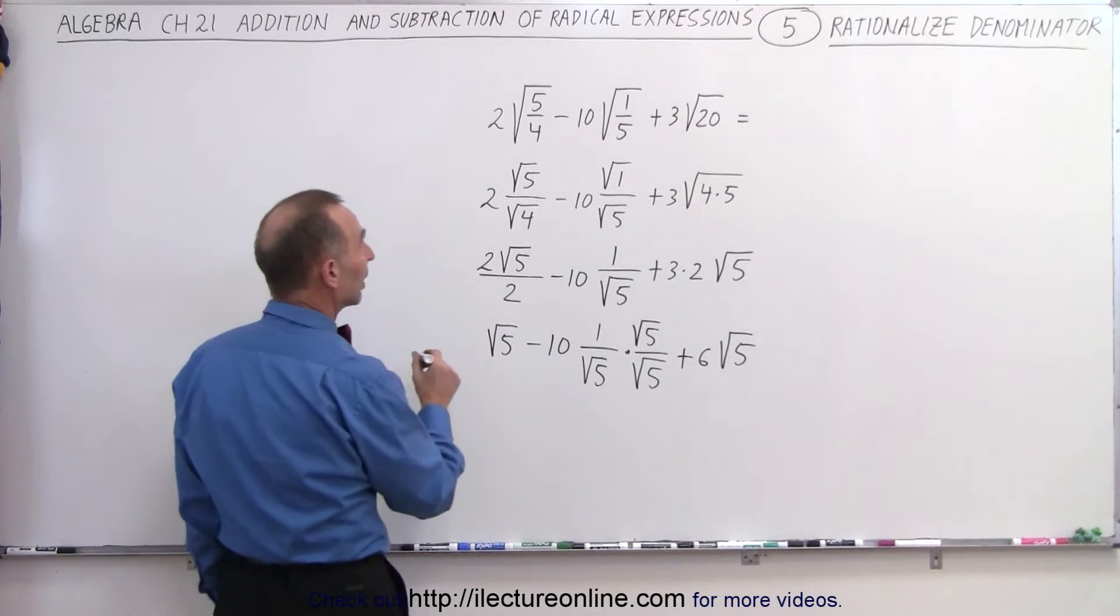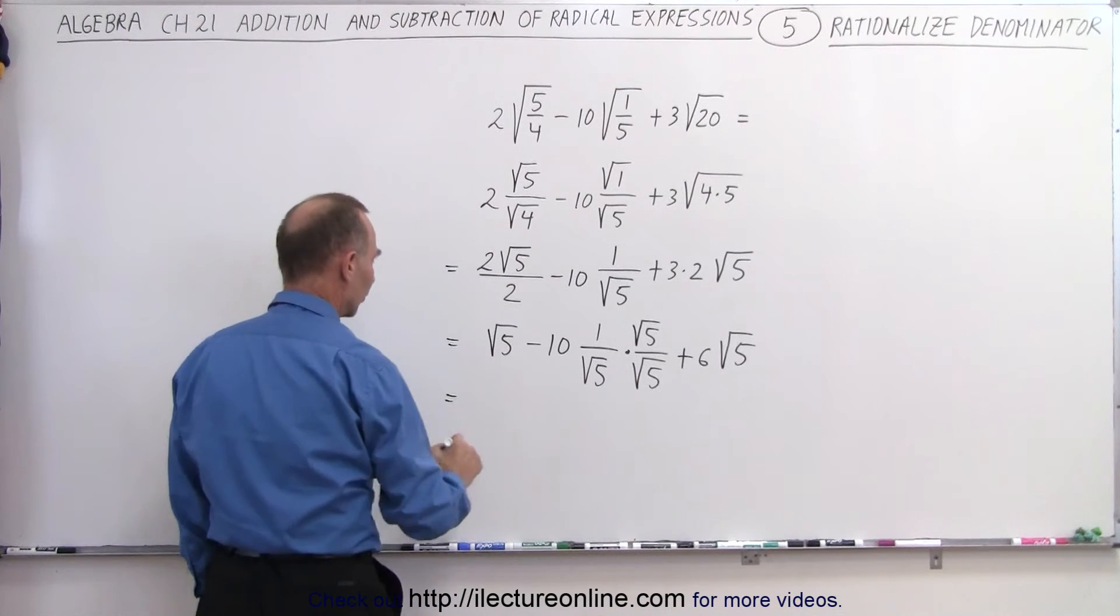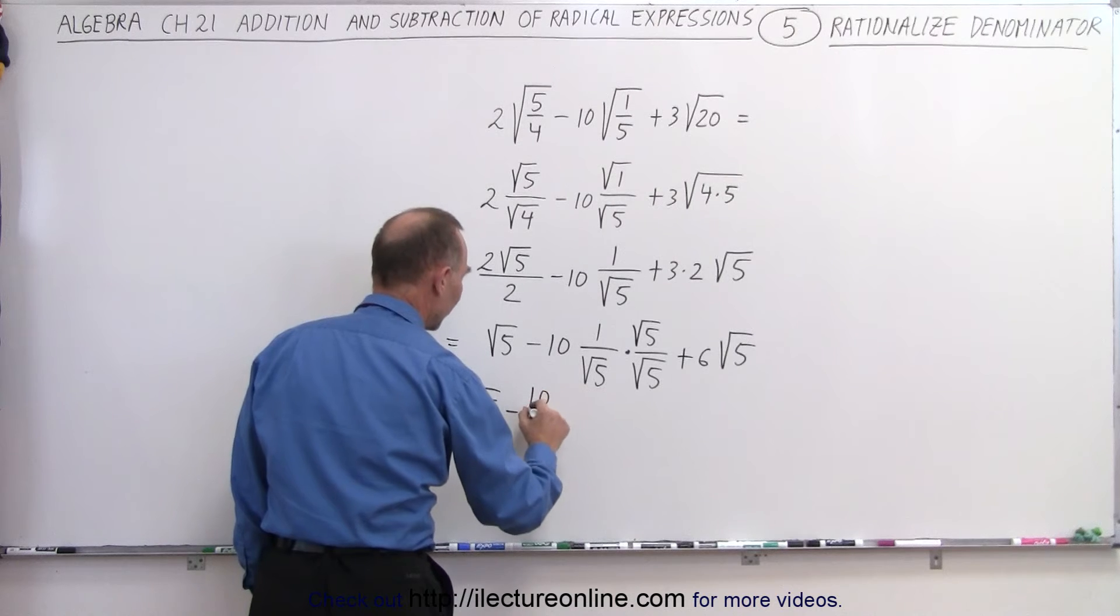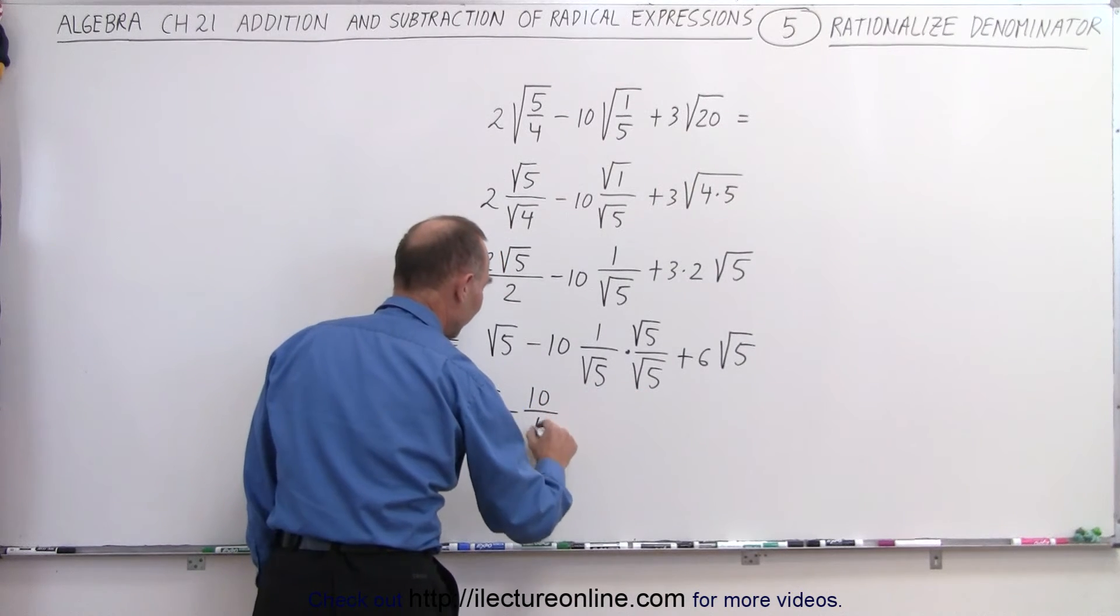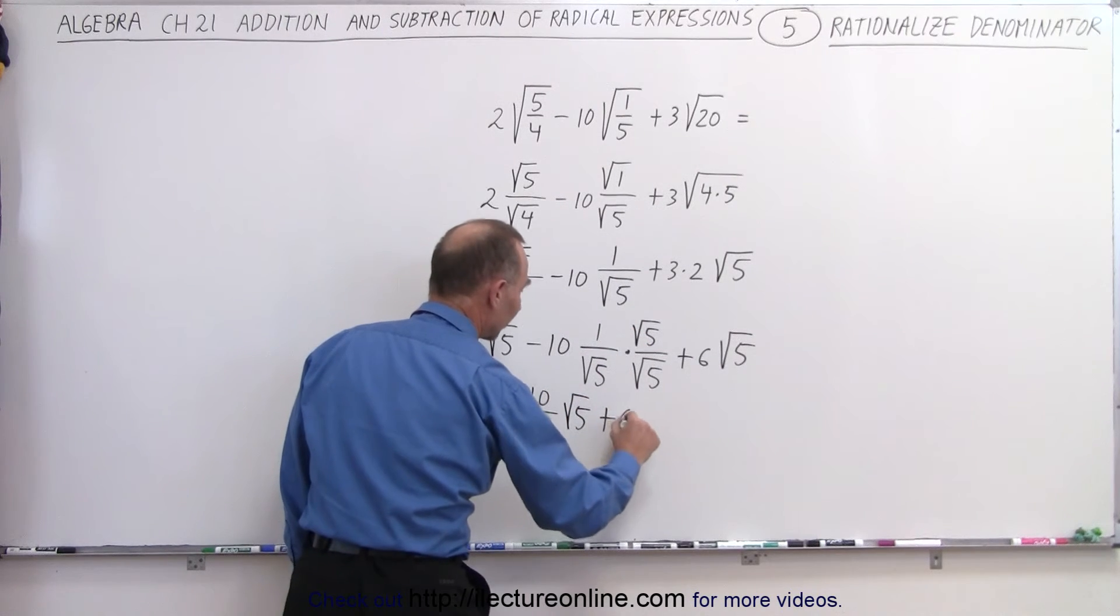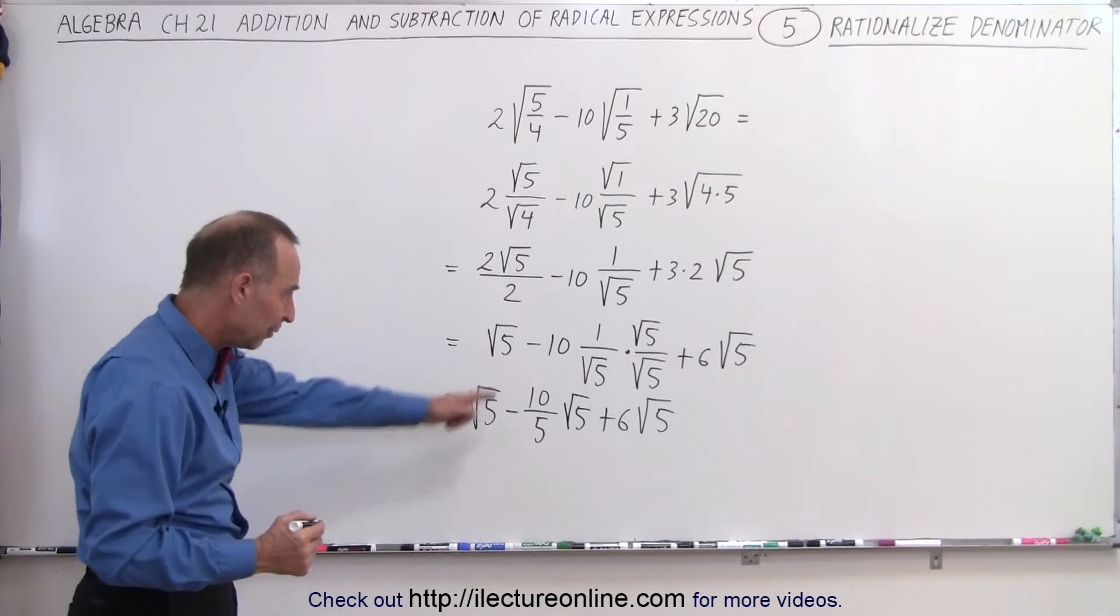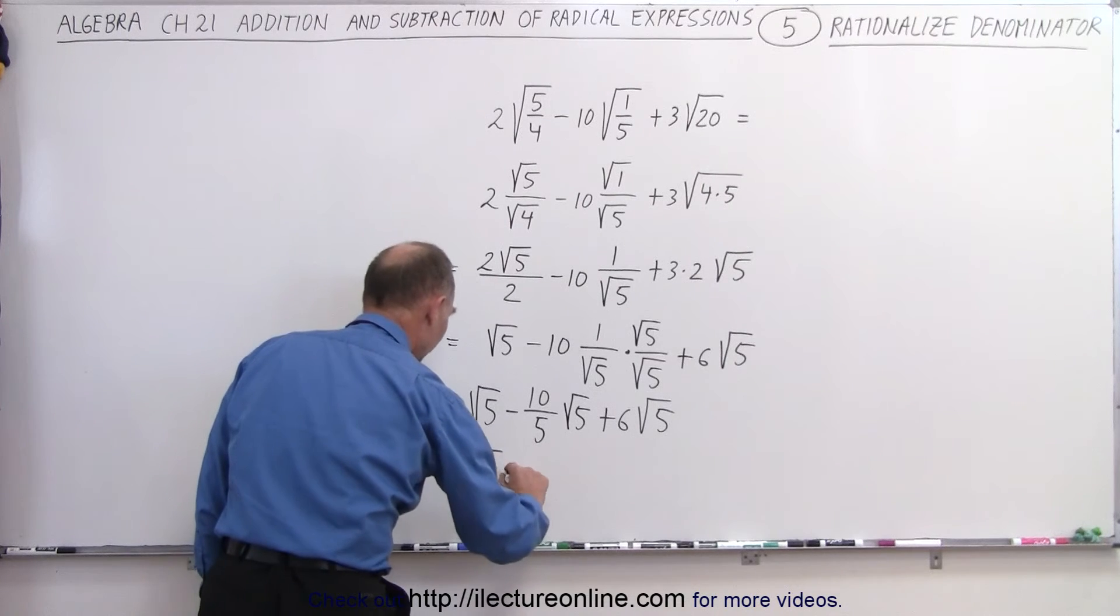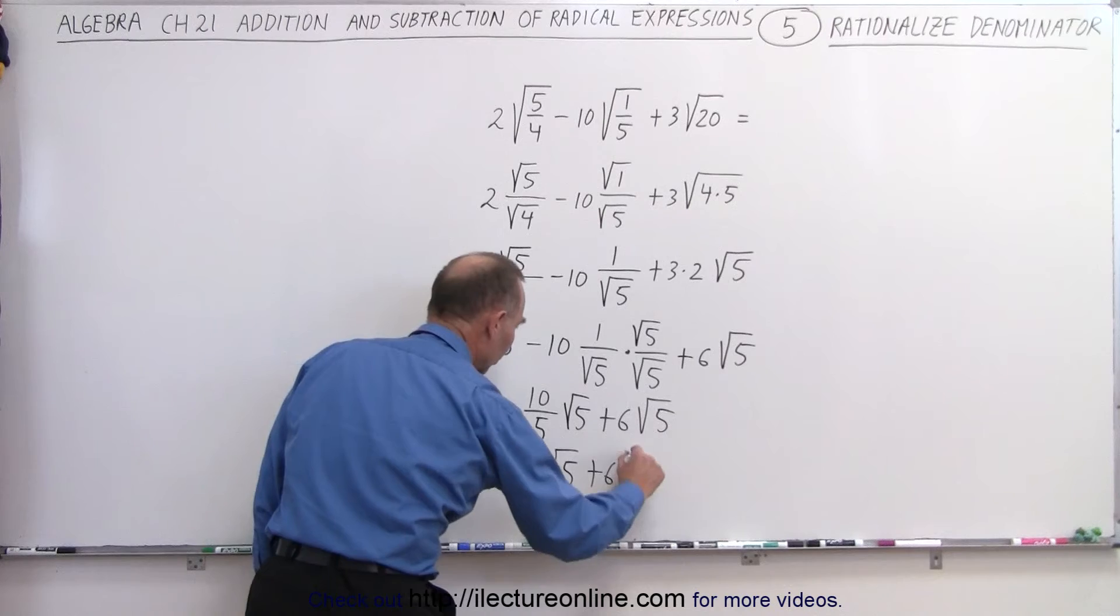Continue to simplify that some more, and I think I'm missing some equal signs, so let me put some equal signs in. So now we have the square root of 5 minus 10 divided by the square root of 5 times the square root of 5 is simply 5, and then we still have the square root of 5 in the numerator, and then plus 6 times the square root of 5. And then if we simplify this some more, we get this equal to the square root of 5 minus 2 times the square root of 5 plus 6 times the square root of 5.